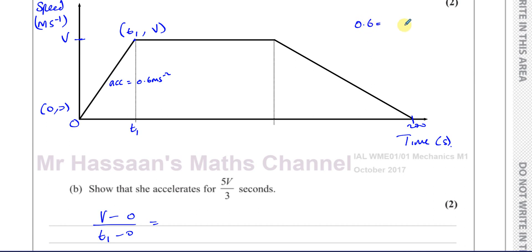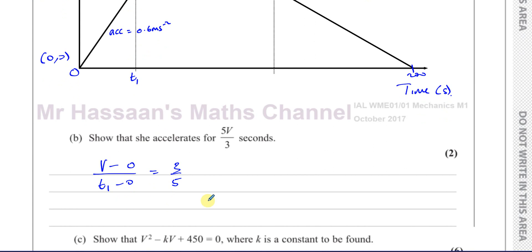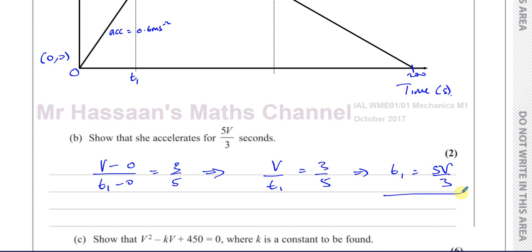Since 0.6 equals 3/5, we have V over T1 equals 3/5. Rearranging, T1 equals 5V/3, which is what we had to show. There's the answer to Part B.